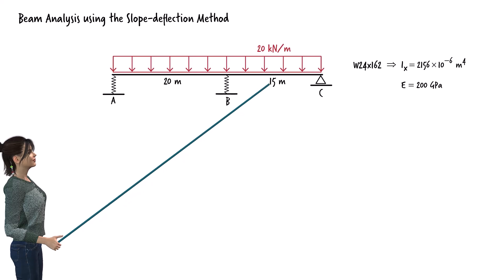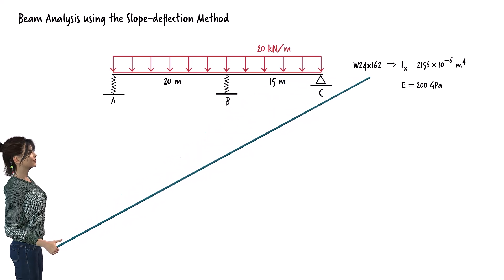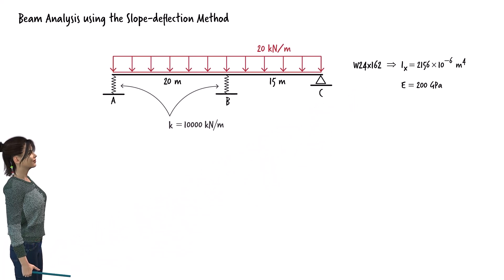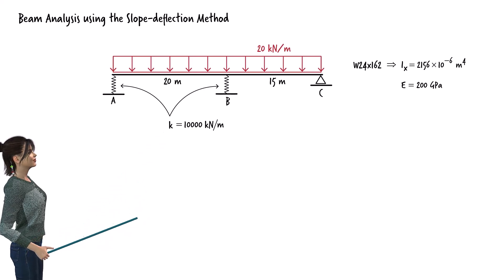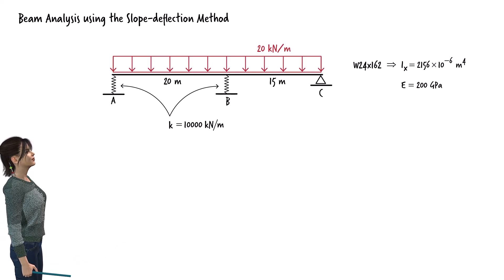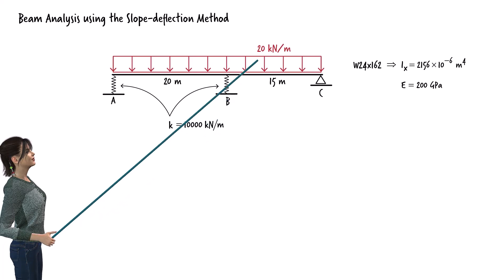The beam has a standard W24 by 162 cross-section. The elastomeric bearings have an axial stiffness coefficient of 10,000 kN per meter. We wish to analyze the beam when the train spans the full length of the bridge. The distributed load on each beam is 20 kN per meter.